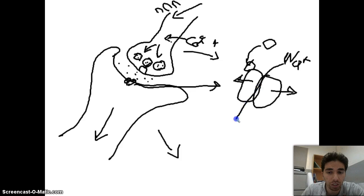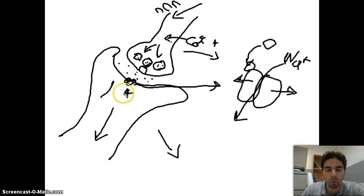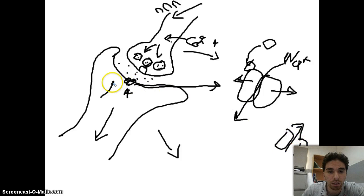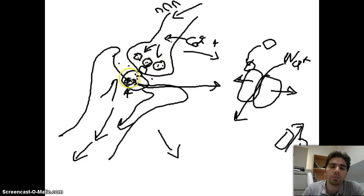Now if we want an action potential to continue in the other neuron, which channels will open? We will open the Na+ channels, because if Na+ channels are open, Na+ will rush inside. Na+ rushing inside will create a depolarization. This will then cause K+ channels to open, K+ will go out — that's repolarization. We have an action potential starting here, and it will continue in this neuron.